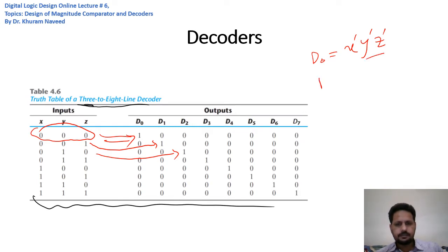x'y'z. Similarly, for D₂ we have x'yz', and for D₃ we have